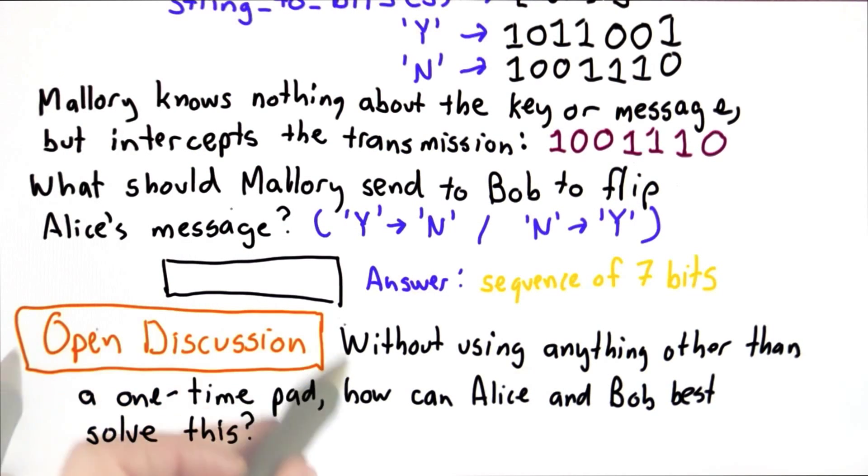So once you understand the answer to this, I want to encourage you to join an open discussion question, which is: is there a way to solve this problem? Without using anything other than a one-time pad, is there a way for Alice and Bob to communicate correctly the answer to this question and know that it can't be altered in transmission and still preserve all the privacy properties of a one-time pad?